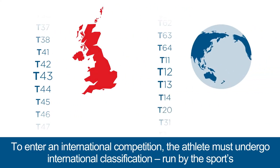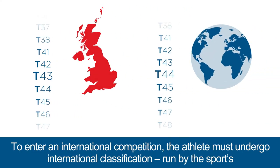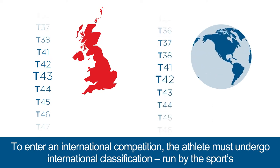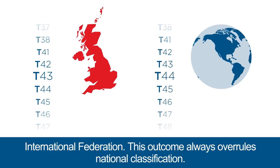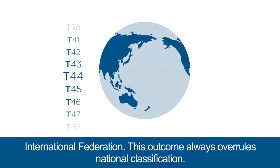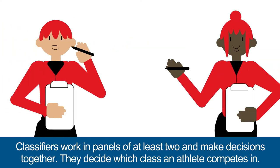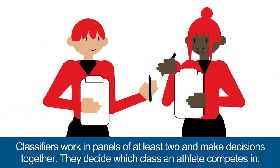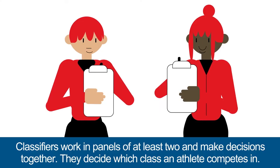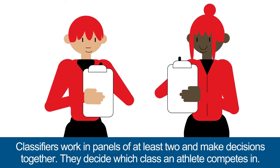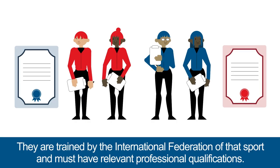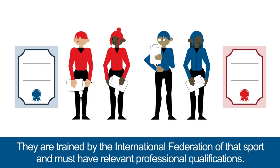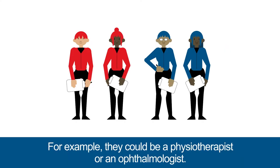To enter an international competition, the athlete must undergo international classification, run by the sport's international federation. This outcome always overrules national classification. Classifiers work in panels of at least two and make decisions together. They decide which class an athlete competes in, and are trained by the International Federation of that sport and must have relevant professional qualifications — for example, they could be a physiotherapist or an ophthalmologist.